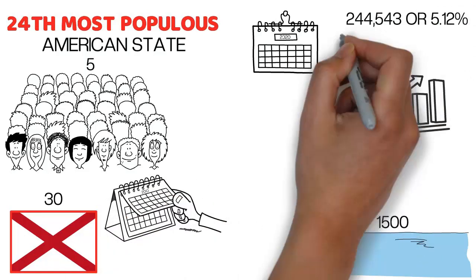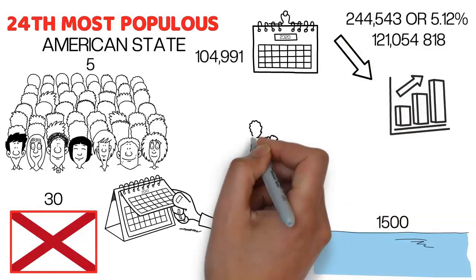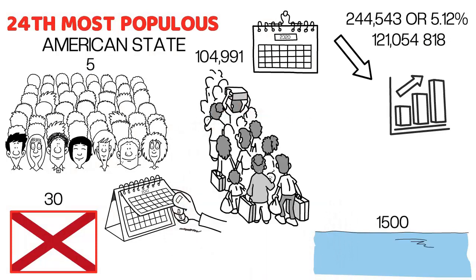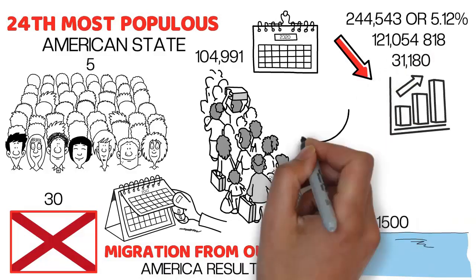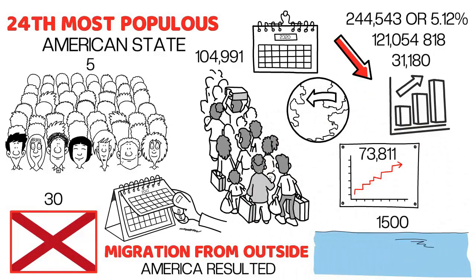This comprises a natural increase of 121,054 people and a total migration of 104,991 people into the state. Migration from outside America resulted in a total increase of 31,180, and relocation within the country produced an increase of 73,811.